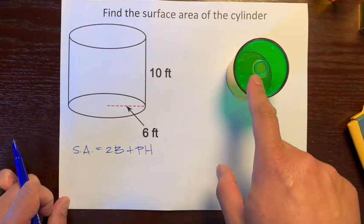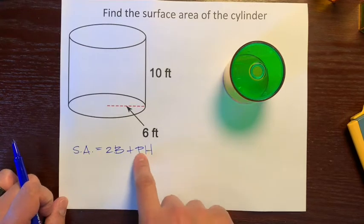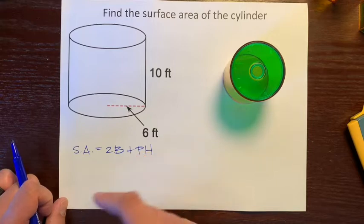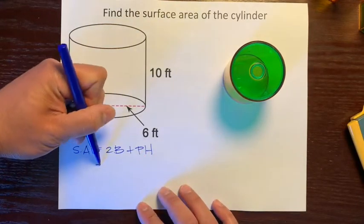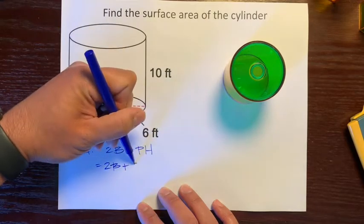But you might be thinking, wait a minute, the base is a circle. Can we change this letter instead of P? What's another word for perimeter of a circle? Well, it's circumference. So let's just change that letter to 2B plus CH.